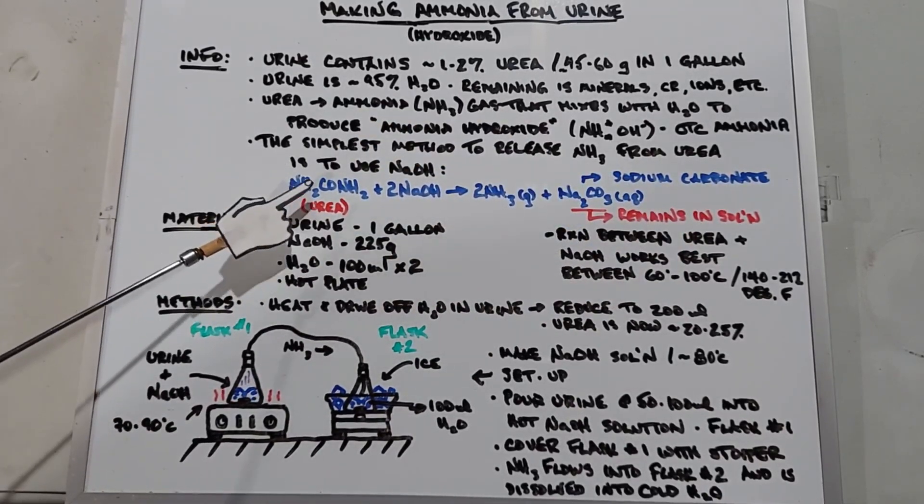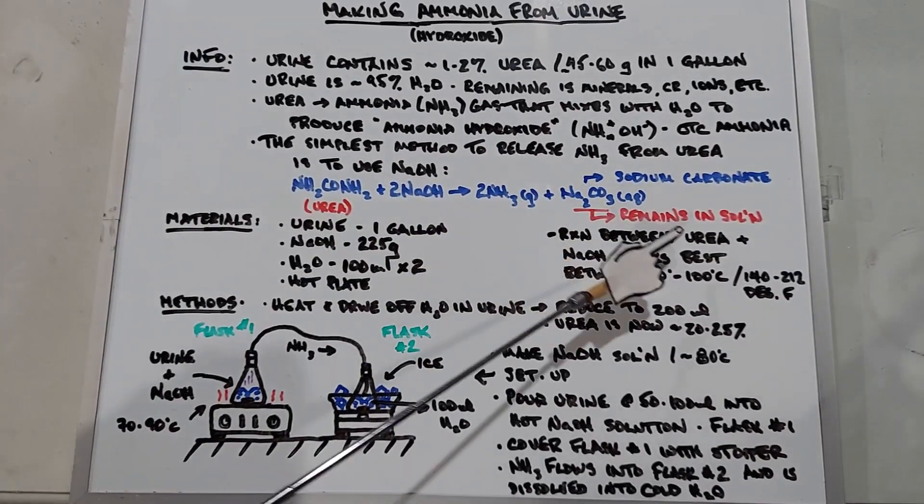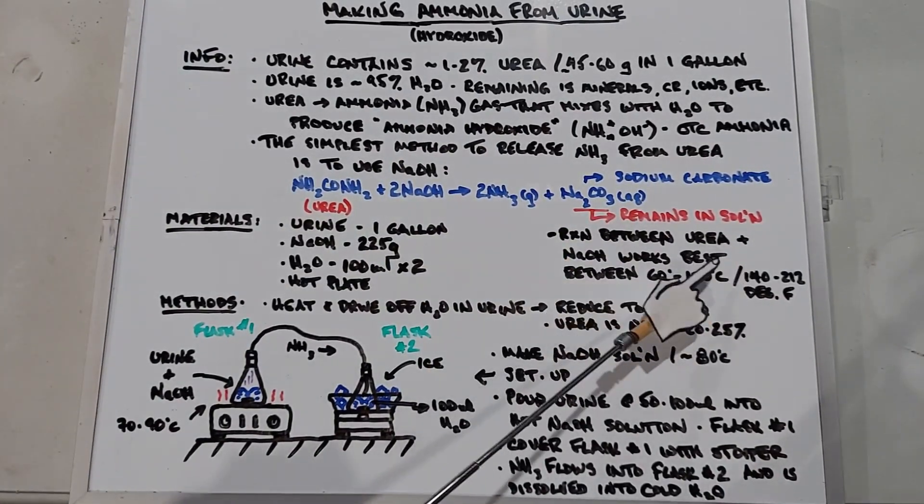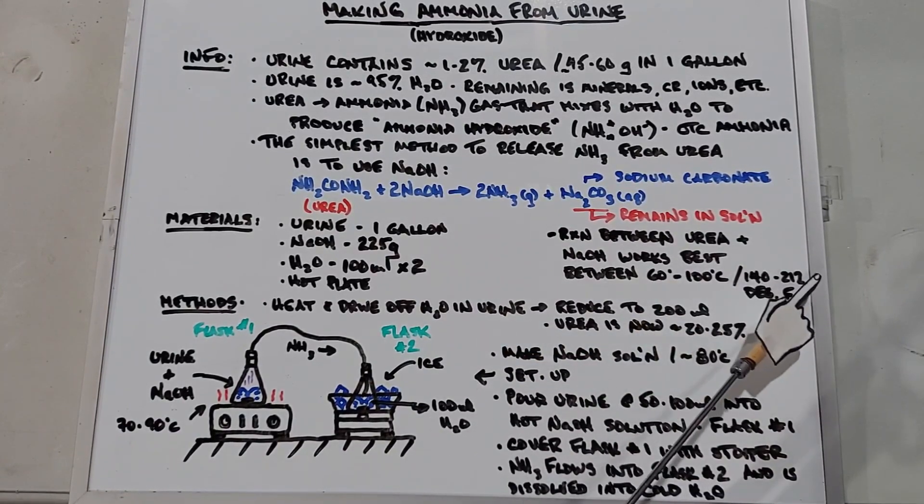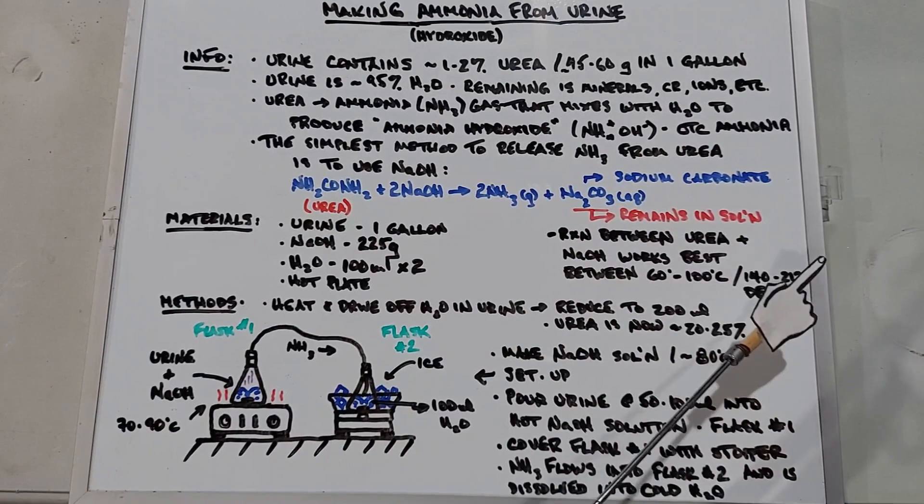The reaction between urea and sodium hydroxide works best between 60 and 100 degrees Celsius, which is around 140 to 212 degrees Fahrenheit. So in order to get the best reaction we're going to need to heat things up.